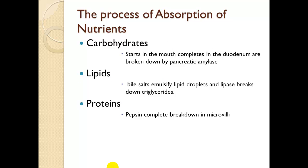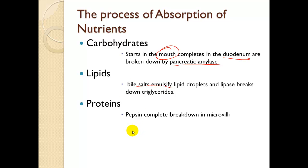The process of absorption of nutrients occurs in various spots. For carbohydrates, it begins in the mouth and completes in the duodenum, broken down by pancreatic amylase; we start by introducing salivary amylase when chewing. Lipids: bile salts from the gallbladder break into droplets and lipase breaks down triglycerides. Protein: pepsinogen from the stomach turns into pepsin, and proteins are completely broken down in the microvilli of the small intestine.